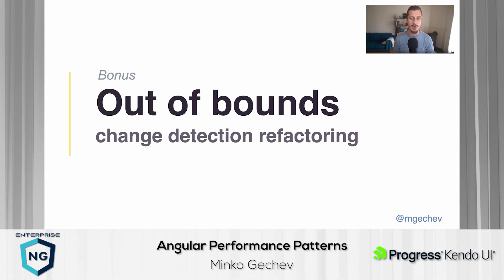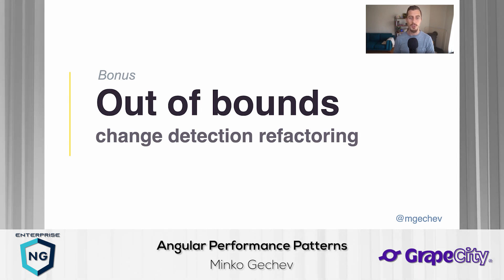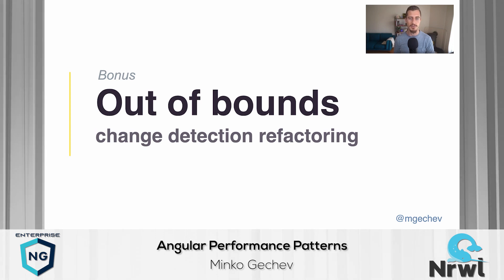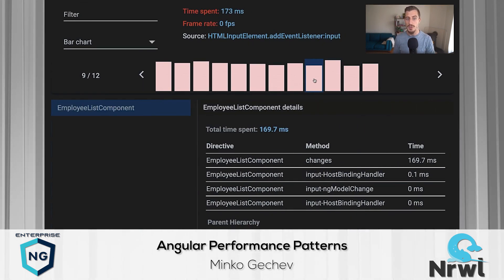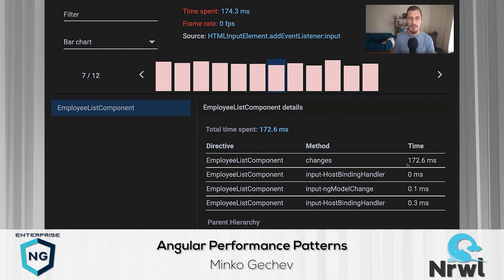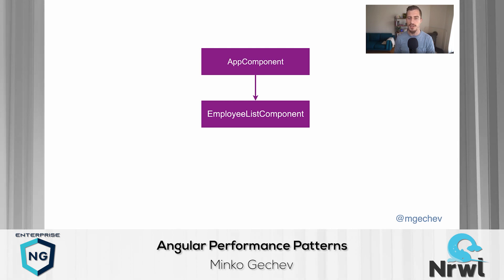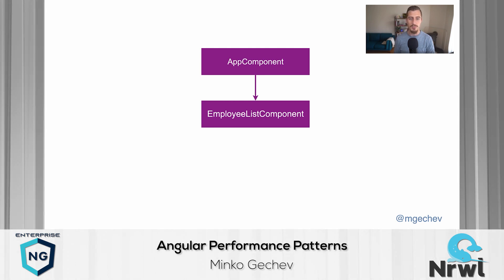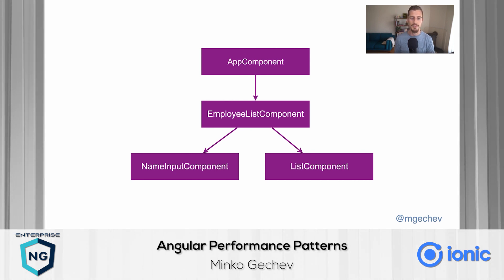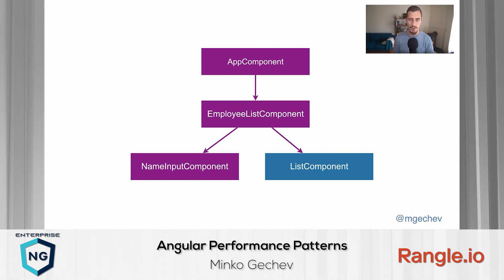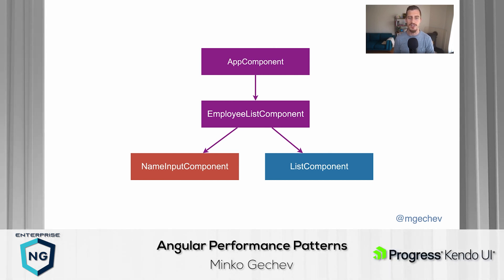This happens because typing into the input triggers events that bypass the OnPush change detection strategy. When an event within a component with OnPush change detection strategy occurs, Angular will detect this component for changes, even if it hasn't received new inputs. The problem is that we are only changing the local state of the input, but not updating the individual employees, which means that it is safe to completely skip change detection for them. To improve the performance here, we'll refactor the component tree. The employee list component will use the name input component to get new employees' names, and a list component to render the list of employees. We'll use OnPush change detection strategy for the list component, so events happening in the sibling name input component will not trigger any redundant re-evaluations for employees.